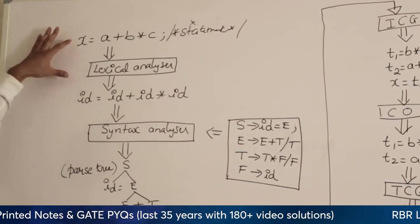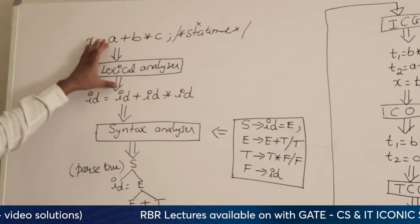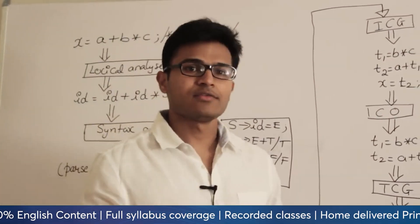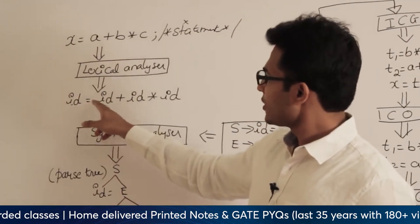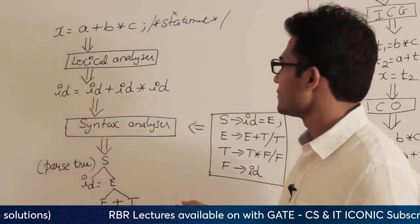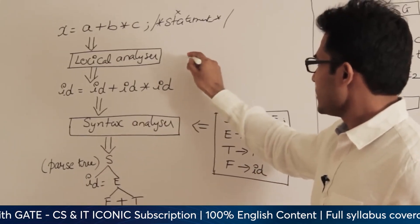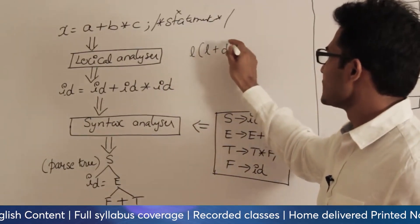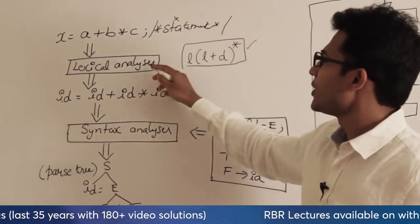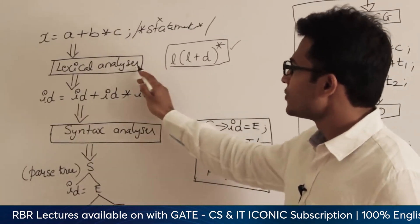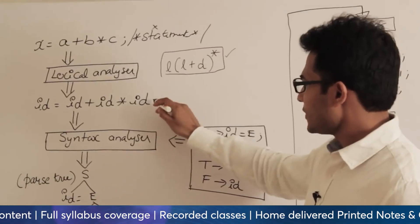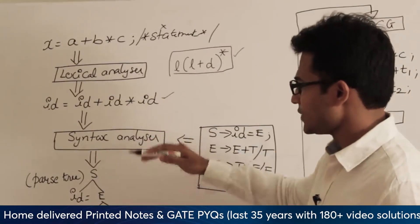How does the lexical analyzer identify these tokens? It uses regular expression patterns. For example, an identifier can be a letter followed by any number of letters or digits — that is the pattern. If anything matches this pattern, it is automatically identified as an identifier. The pattern will be known to the lexical analyzer beforehand. Once we get the stream of tokens, it will be given to the syntax analyzer.